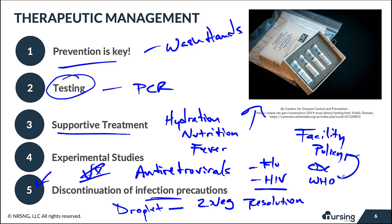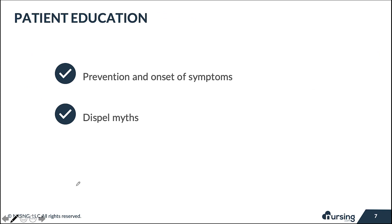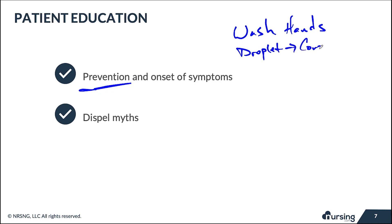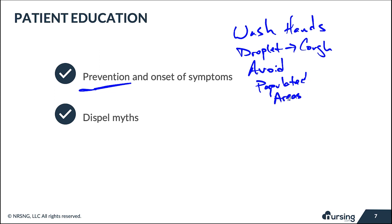Patient education is where nurses can provide real value. The most important focus is prevention. Teach patients to wash their hands thoroughly and frequently, as this is the most effective way to reduce transmission. Additionally, avoiding highly populated areas significantly reduces risk. Because COVID-19 spreads via droplets that land on surfaces, hand hygiene is critical any time there is coughing nearby.